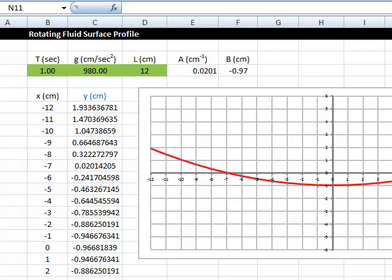Here's a spreadsheet that calculates and plots the surface profile given input parameters, such as the period in seconds, little g, the strength of gravity in centimeters per second squared, and l, the width of the tank on either side of the axis. And it calculates the value of a and b. You can see the formula for a is 2 pi squared over g t squared. b is negative a l squared over 3. And then for a variety of different x's in centimeters, it calculates the corresponding y-coordinate of the surface.